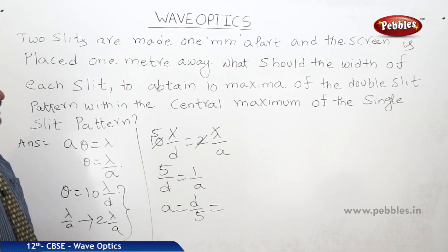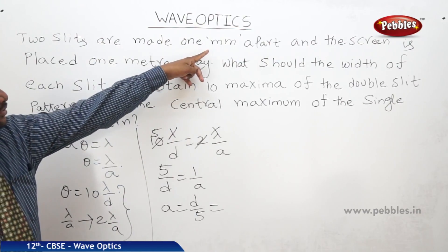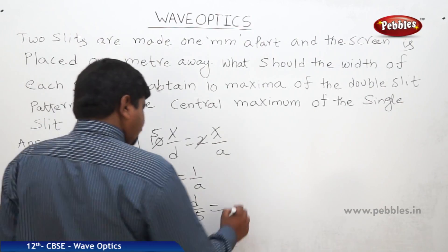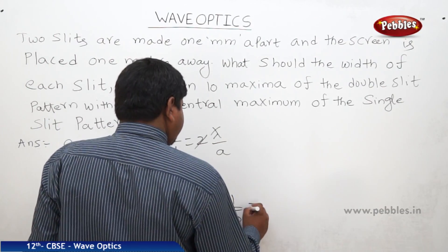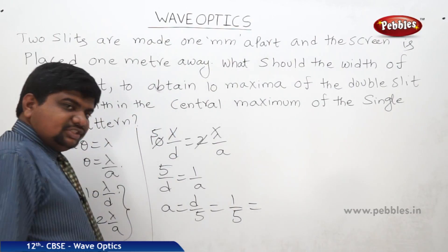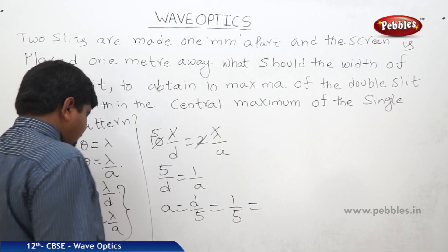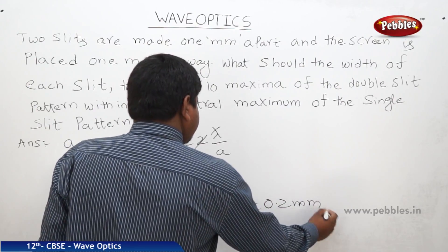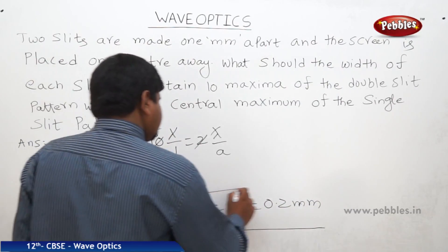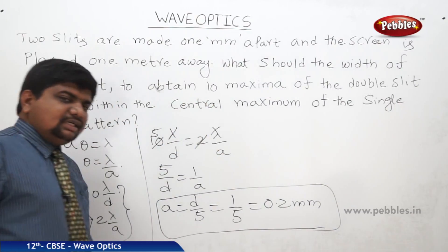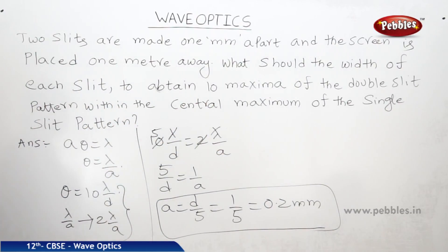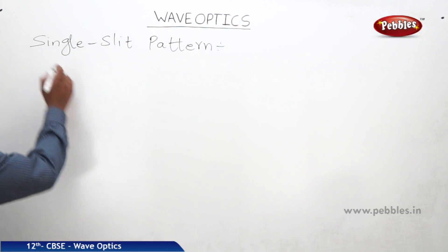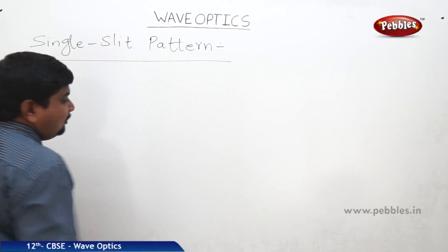The distance between the two slits is 1 millimeter, so substituting d equals 1, we get a equals 1 by 5 equals 0.2 millimeters. Like this, the interference pattern changes to a diffraction pattern. Now we will see the single slit pattern of diffraction.